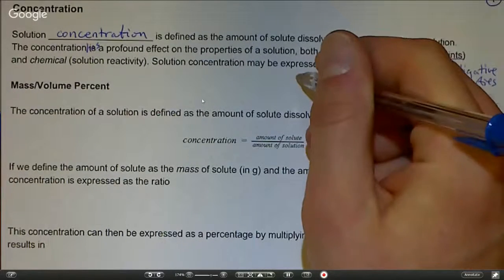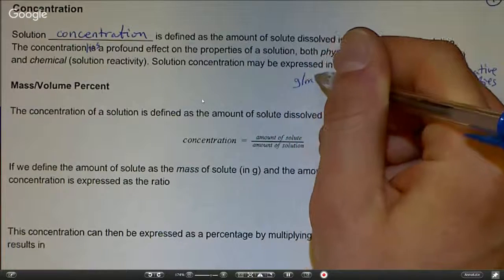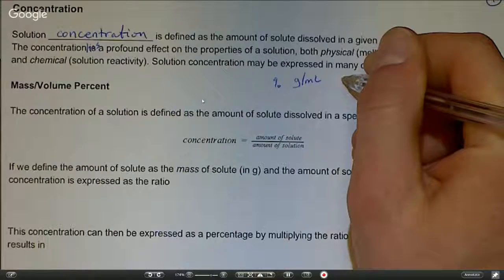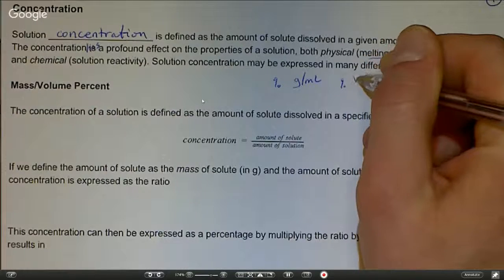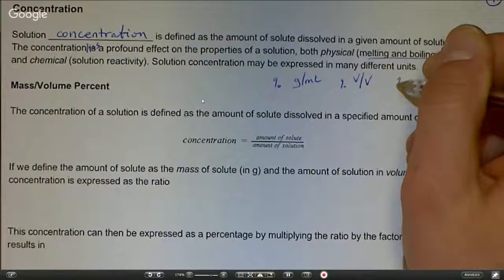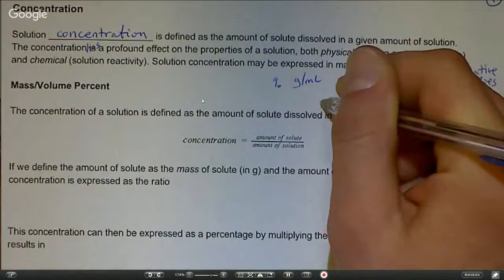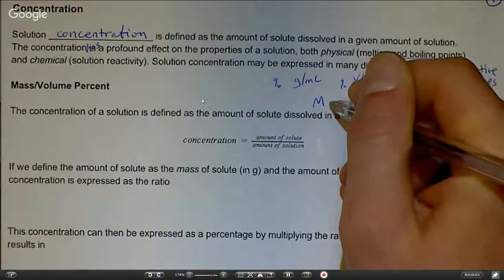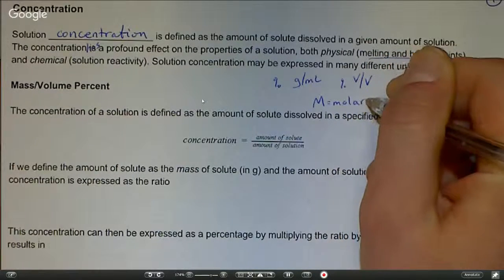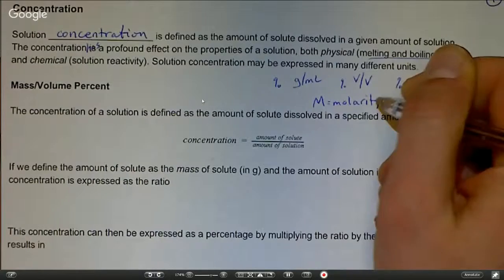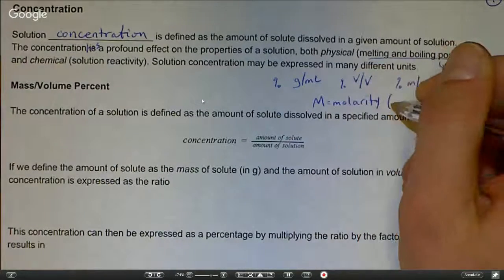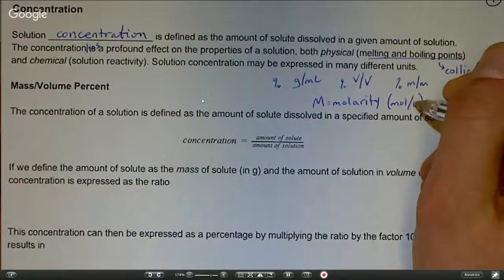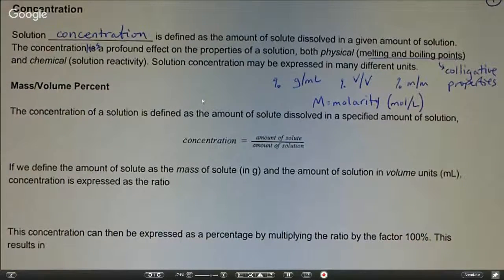These units include grams per milliliter when doing percentages. We're going to see percent when it's volume by volume or percent mass by mass. We're also going to see molarity, big M, which stands for number of moles of solute per liters of solution, and that one we're going to see in the next video tomorrow.